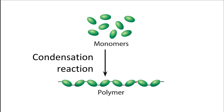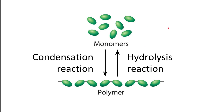If a polymer is to be broken down into monomers, we have a hydrolysis reaction. Break the word down: hydro means water, lysis means break. We use water to break the covalent bond. Part of the water molecule binds to one monomer, the other part binds to the other monomer, the water molecule is effectively used up, and the monomers are released.